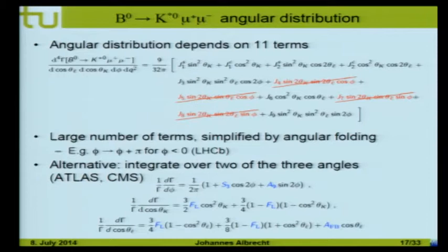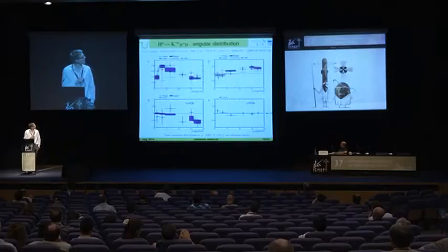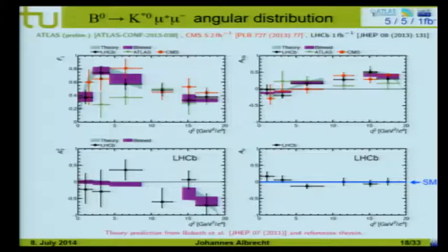The 11-term expression is complicated and datasets with a few hundred events binned in q² are not very large, so you simplify. LHCb simplifies by an angular folding — φ is transformed into φ+π — dropping four out of the 11 terms. ATLAS and CMS integrate out two of the three angles, also reducing the expression to four free parameters. The results from ATLAS, CMS, and LHCb show the different terms including the most famous one, the forward-backward asymmetry, with the standard model prediction shown as violet bands. The measurements agree very well with the standard model prediction for all four terms.